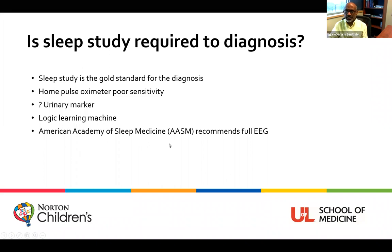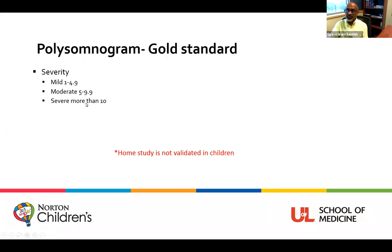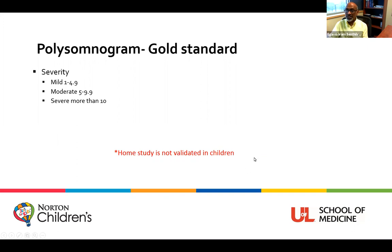Currently, the American Academy of Sleep Medicine recommends a full EEG for children with Down syndrome. In the sleep study — called a polysomnogram — that's the gold standard diagnostic test. What we look for in children with sleep apnea: mild is 1 to 4.9, moderate is 5 to 9.9, and severe is 10 or above. In adults the numbers are different: mild is 5 to 15, moderate is 15 to 30, and severe is more than 30. Currently, we do not use home studies for children.